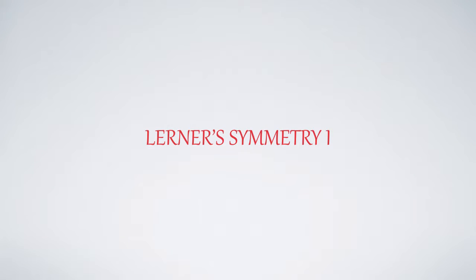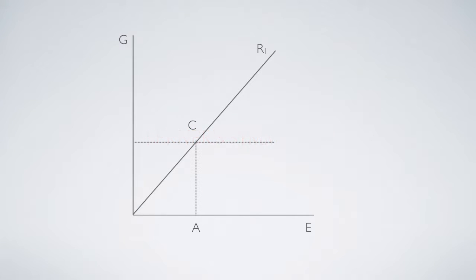This video proves that Lerner's accounting has confused debit and credit. Here E is England's export, while G is import from Germany. C is the original position, and England imports CA amount of G.